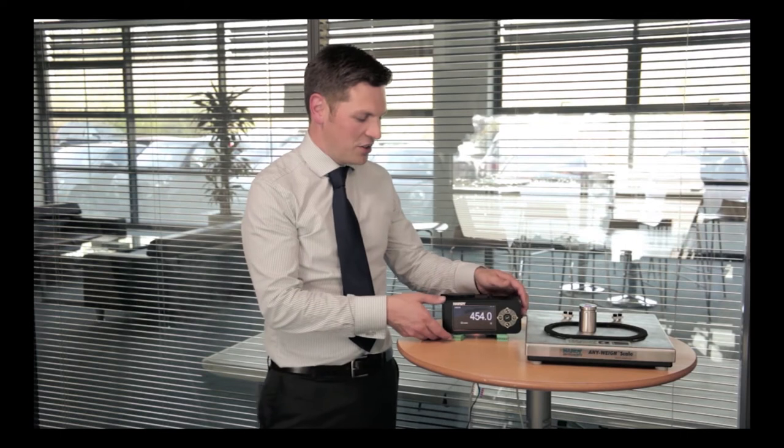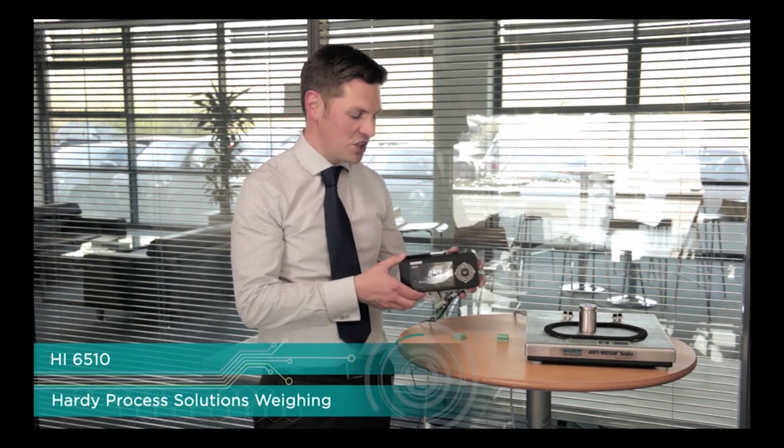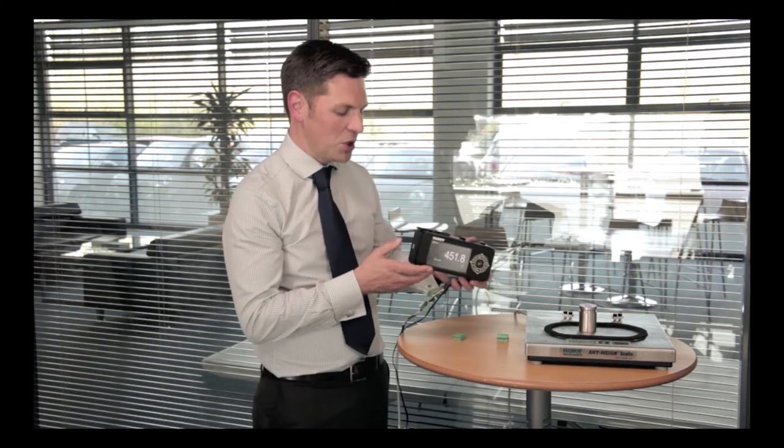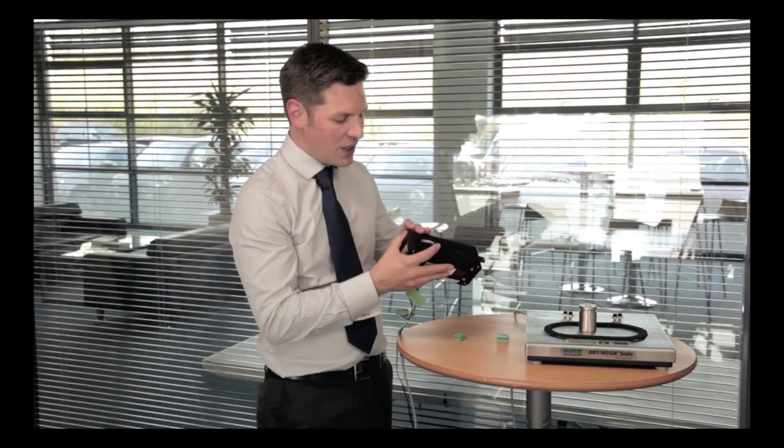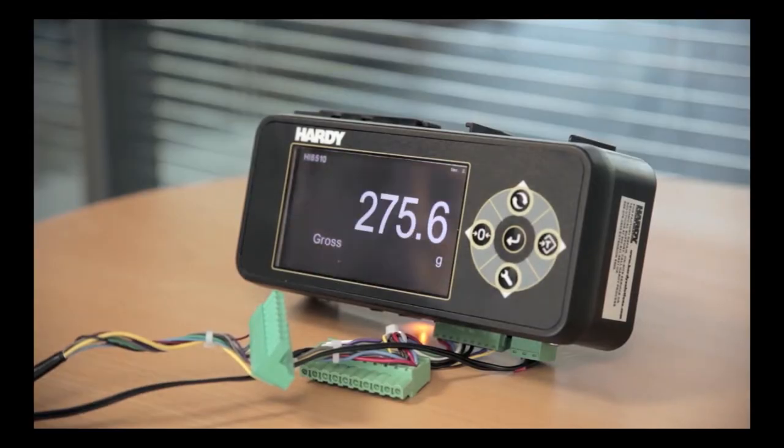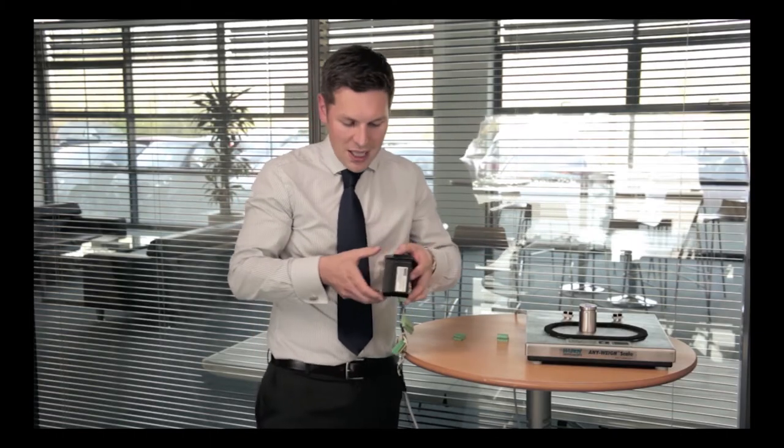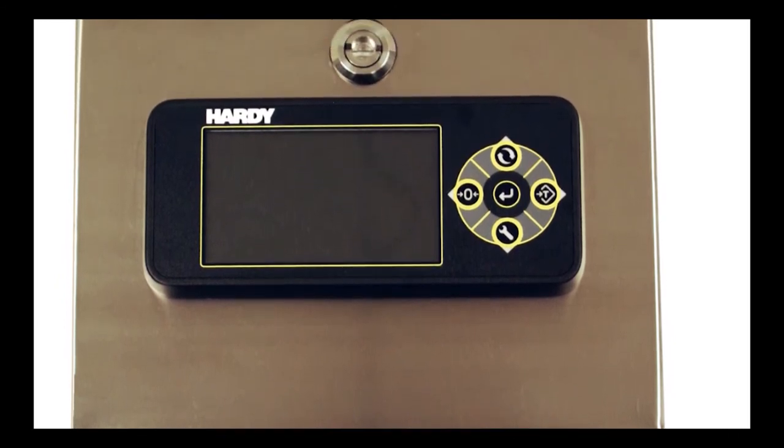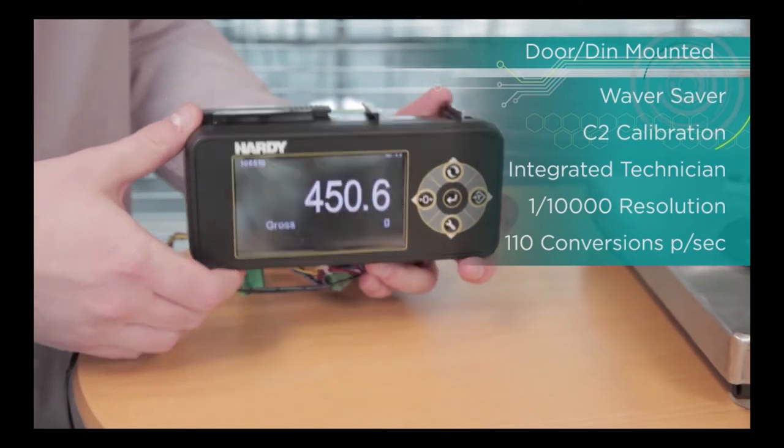This is a standalone instrument, the HI6510 instrument, and this one's quite a nice form factor. It's not shown here particularly well, but this screen is optional and this is the instrument on the back. You can DIN rail mount that or you can door mount it. In fact, you can mount it on the door by clamping the screen to the instrument through the door there, so it's quite flexible like that.